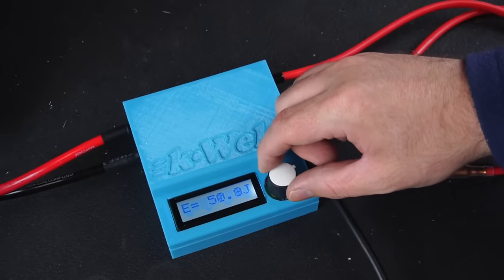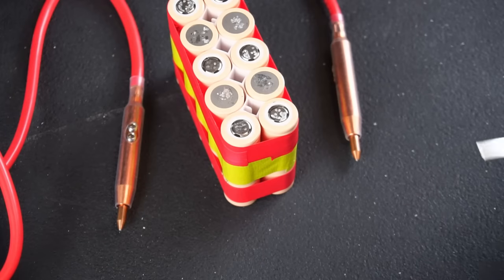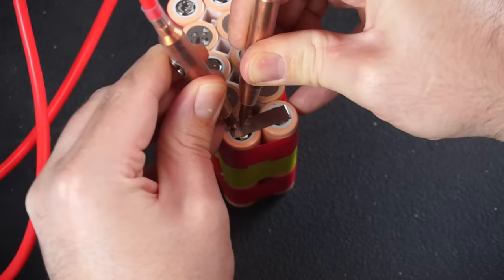Next I set up my spot welder and programmed it to output 50 joules. Now it was just a matter of placing 2 sets of welds on each connection.